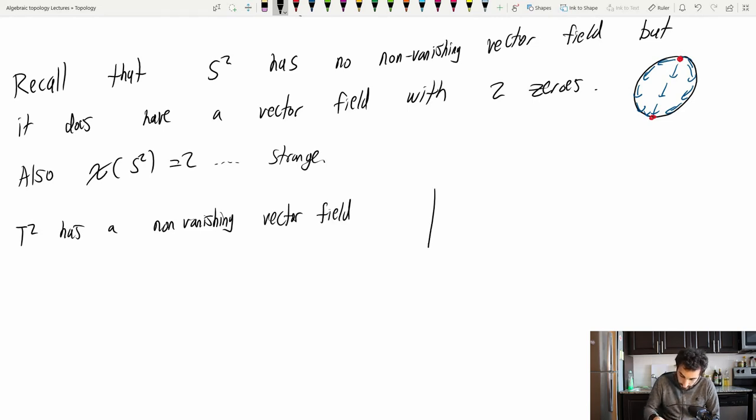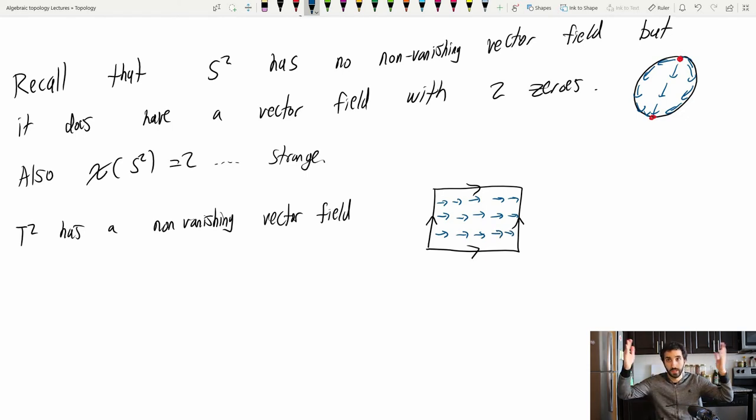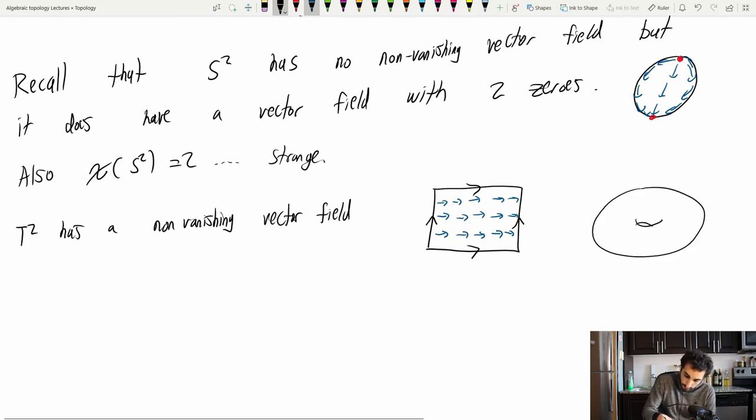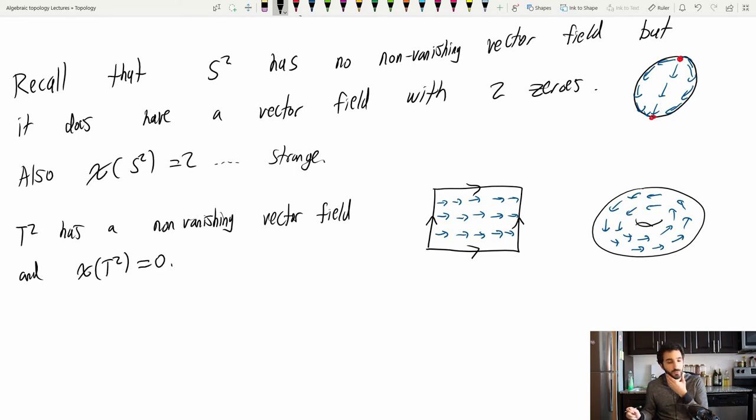So T2 has a non-vanishing vector field. So that looks like here's our usual picture of the torus. And if I just take the arrows sort of going right all the time, they come out of the other end and they meet up, so everything is nice and continuous. And I can do this the whole way up and down the torus.